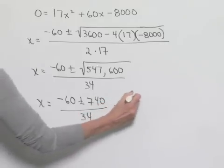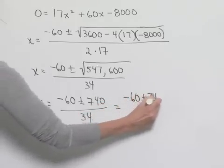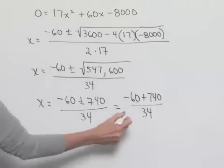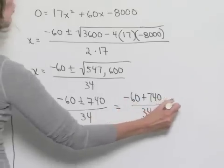So we're going to have negative 60 plus 740 divided by 34. We can evaluate this to come up with our result, which equals 20.